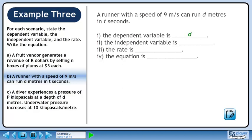The dependent variable is d. The independent variable is t. The rate is 9 meters per second. The equation is d equals 9t.